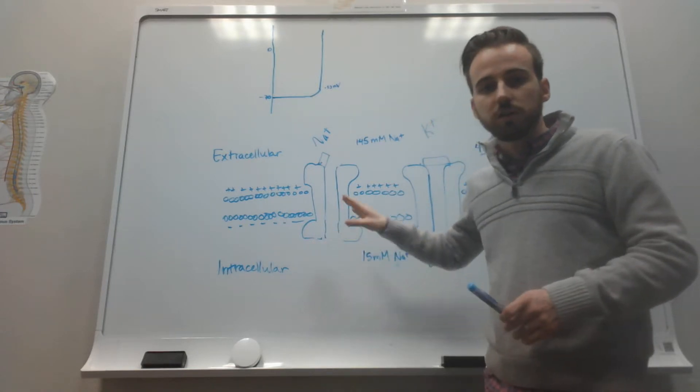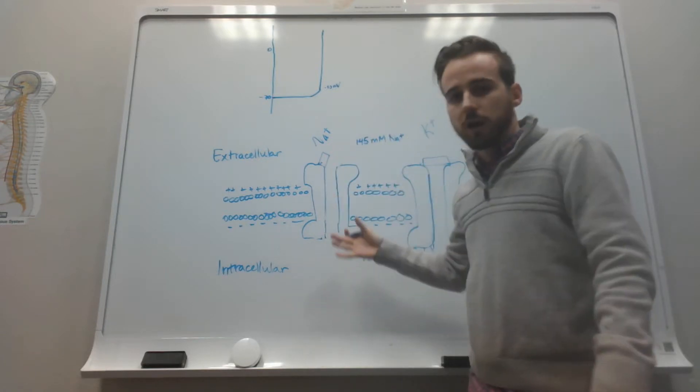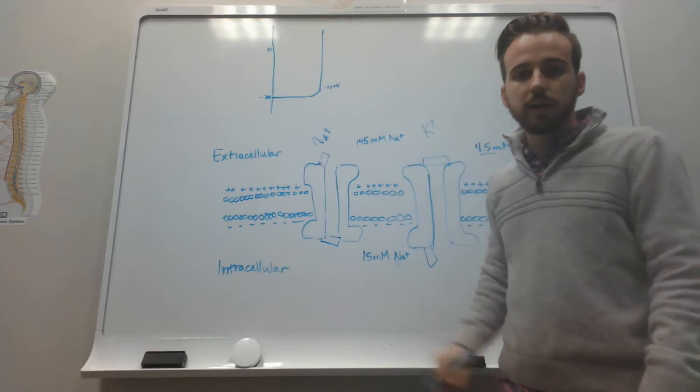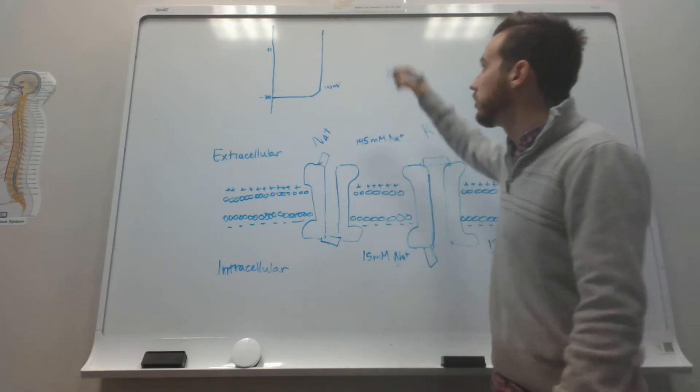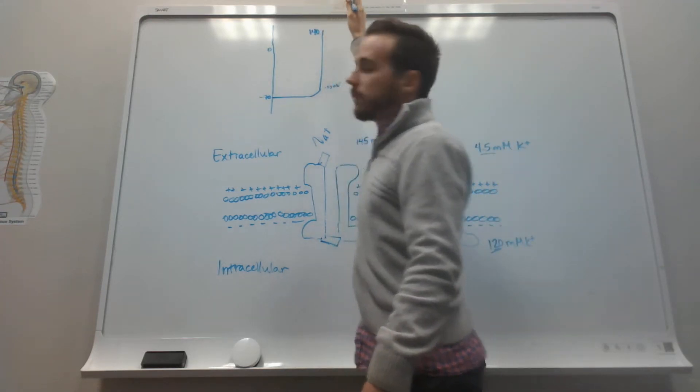One of the inherent functions of the sodium channel is that after about a millisecond, the inactivation gate closes. That stops that influx of sodium. So it reaches about positive 40 millivolts.